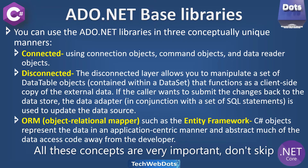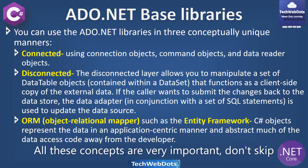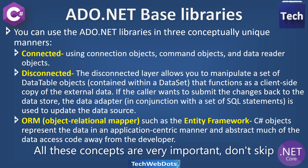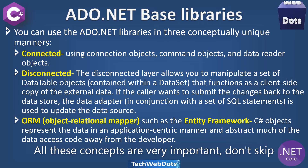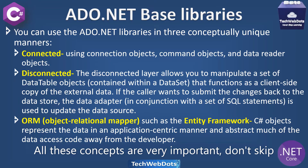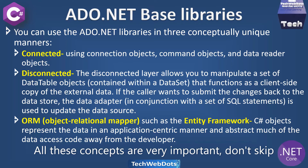The third mode is ORM — Object Relational Mapper — which is the very important one, and Entity Framework is an example of it. C# objects represent the data in an application-centric manner and abstract much of the data access code away from the developer, meaning many of the steps are already completed by the Object Relational Mapper when you use it.